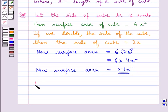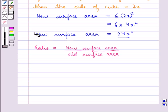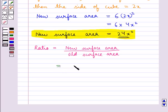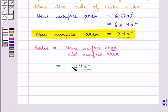Now the ratio of the areas would be equal to new surface area upon the old surface area. We have the new surface area is 24X square. This becomes equal to 24X square upon the old surface area which is 6X square. So we get 24X square upon 6X square.